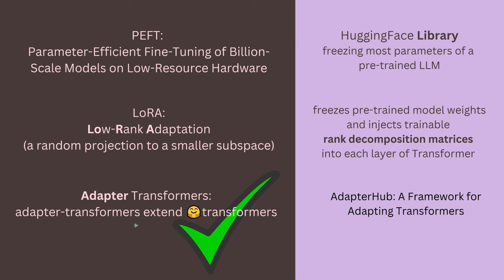That's the first checkpoint — adapter transformers. We understand what adapter transformers are and what the Adapter Hub does. Now the next part is LoRA. There are many questions about the exact mathematics behind LoRA. What is it really doing if you make a deep dive? You'll read phrases like 'a random projection to a small subspace,' but let's look at the mathematics of LoRA to understand how to get the perfect LoRA configuration file for your PEFT model.